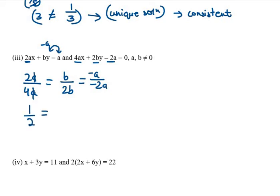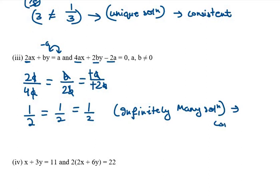Let's solve this further. a and a gets cancelled out, we are left with 1/2 in the first ratio. In the second one again we are left with 1/2. In the last one again we are left with 1/2. So you can see these three are all equal. If they are equal, then this is the condition of infinitely many solutions. If this is infinitely many solutions, then it is consistent.